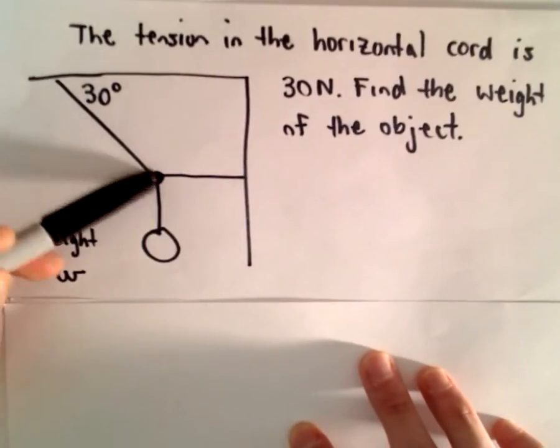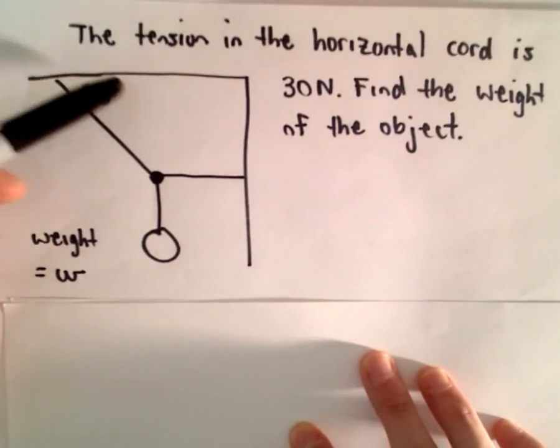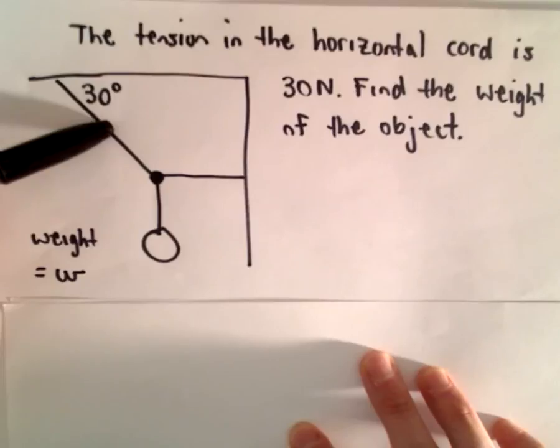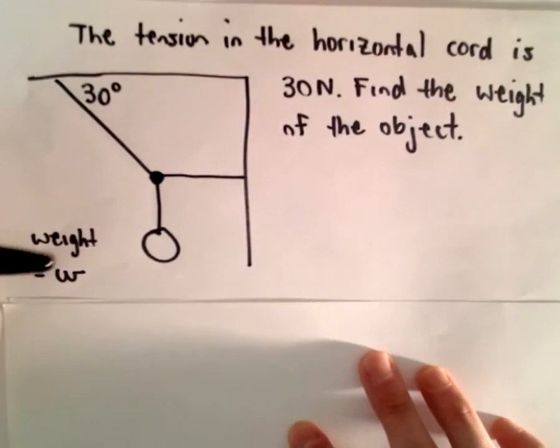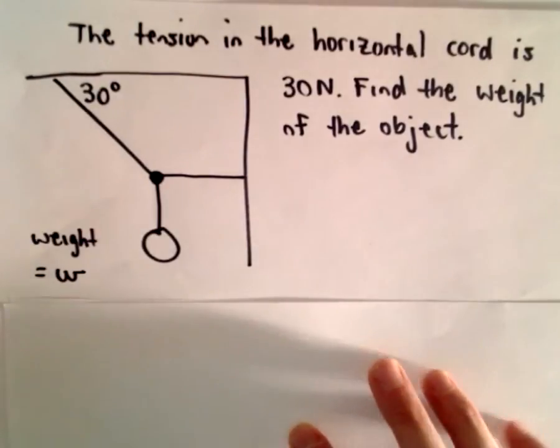And this other cord that's connecting it to the ceiling, we don't know its tension, but we know it makes an angle of 30 degrees. And from that information, we want to find the weight of the object.